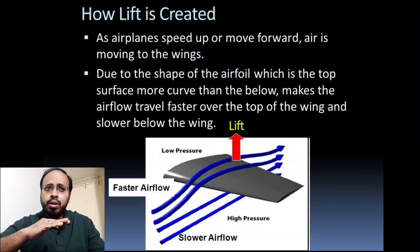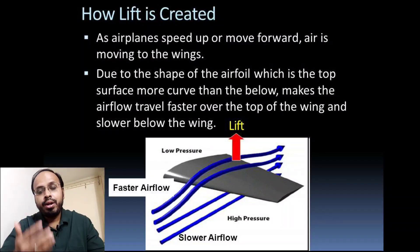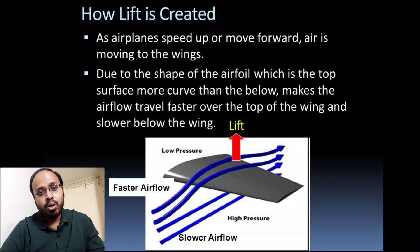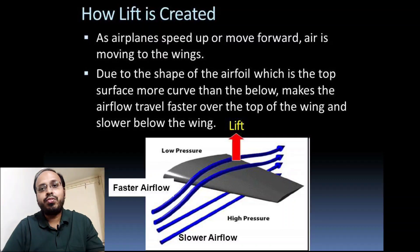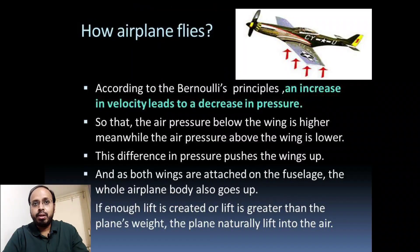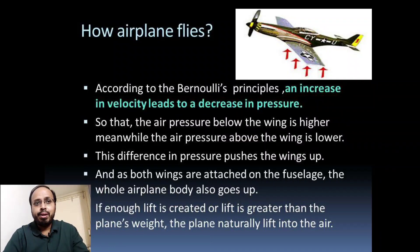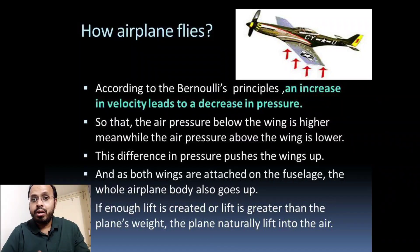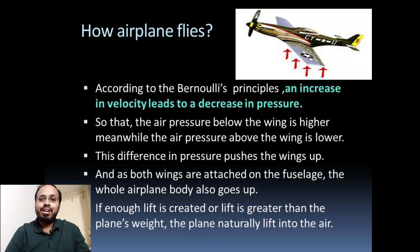The upper surface of the wing is more curved compared to the lower surface, making airflow faster on the upper surface and slower on the lower surface. According to Bernoulli's principle, an increase in velocity leads to a decrease in pressure — so air pressure below the wing is higher while air pressure above the wing is lower. This difference in pressure creates an upward push on the wing. Since both wings are attached to the fuselage, the whole aircraft body goes up, and if lift is greater than aircraft weight, the plane naturally lifts into the sky.